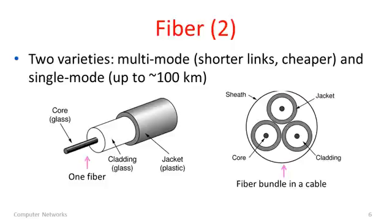Just like different kinds of wire, there are different kinds of fiber. The two most common varieties are what's called multi-mode and single-mode. Multi-mode is the cheaper version, so it's good for shorter links and maybe slower data rates. Single-mode is the more pure, higher quality version. In a single-mode fiber, light can only go straight down the middle because it's so thin, and single-mode fibers can be used to carry signals up to 100 kilometers or so. Just like wires, there's a lot of construction here — the middle portion is actually the fiber, and the rest is just padding and packaging: the cladding and the jacket. There is also a bundle with three different fibers in that one cable.